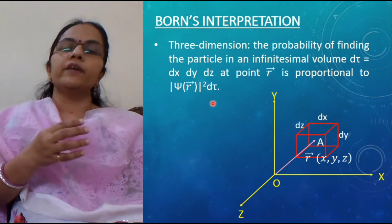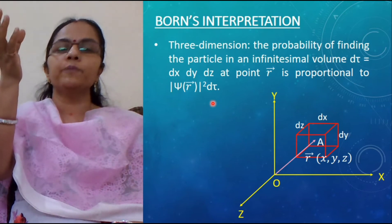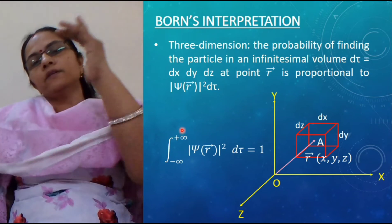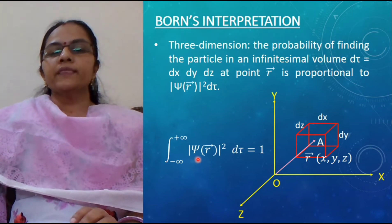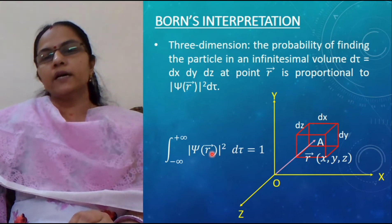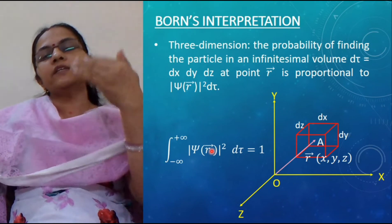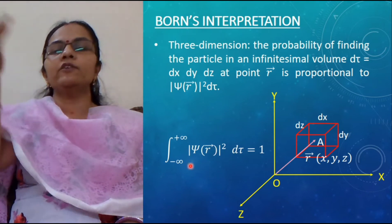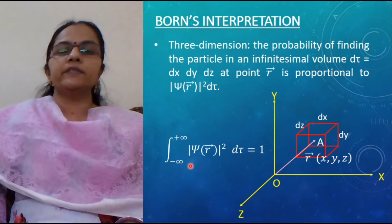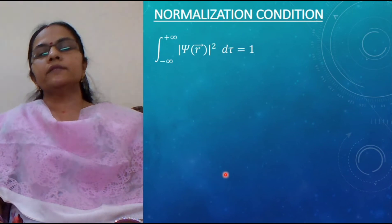When a particle is moving, if we consider the whole space, it is definite that we can get the particle at some or other point. So integrating |psi(r)|² dτ from minus infinity to plus infinity — that is, over the whole space — gives the probability of finding the particle in the whole space. Since we can definitely find the particle at some location, that probability equals 1. Therefore, this integral equals 1, and this condition is also known as the normalization condition.